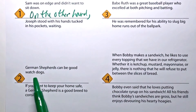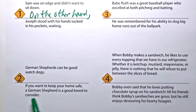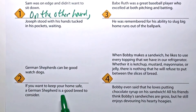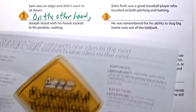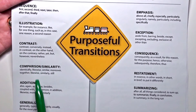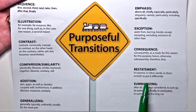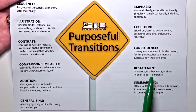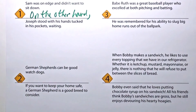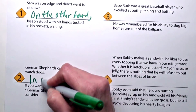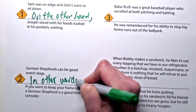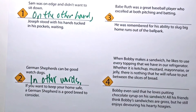Let's try the second one. German shepherds can be good watchdogs. Now let's read the next sentence: if you want to keep your home safe, a German shepherd is a good breed to consider. This is more about watchdogs — it's basically saying the same thing again. It's like a restatement. I'm thinking: 'In other words, German shepherds can be good watchdogs. In other words, if you want to keep your home safe, a German shepherd is a good breed to consider.' The key to transitions is thinking aloud — how are the two sentences connected, how are they related?